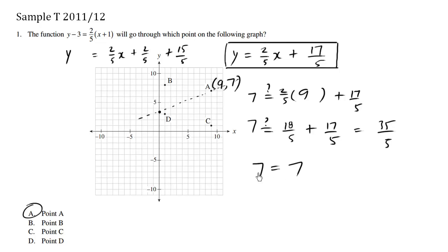So yes, 7 equals 7, left side equals right side. So this point A actually is on this line equation, is on this line. So the answer is A.